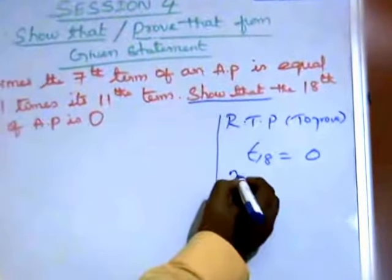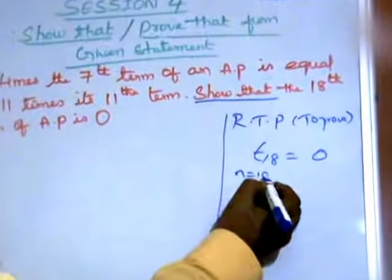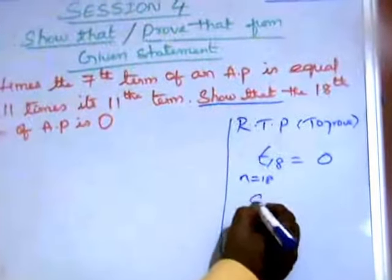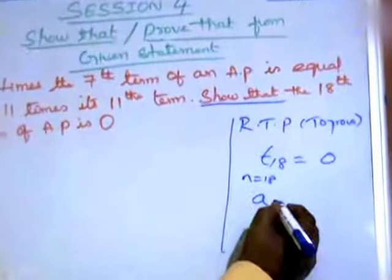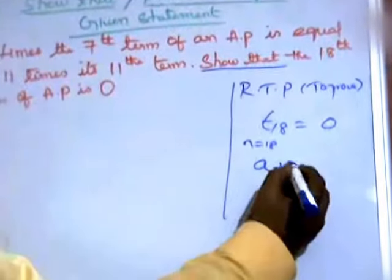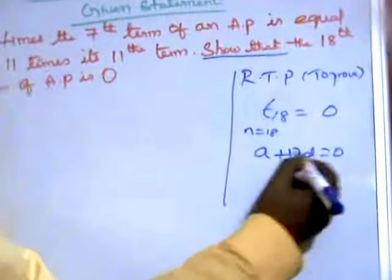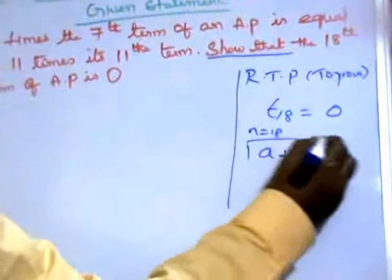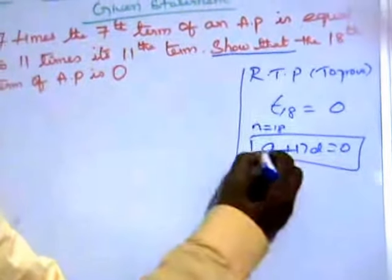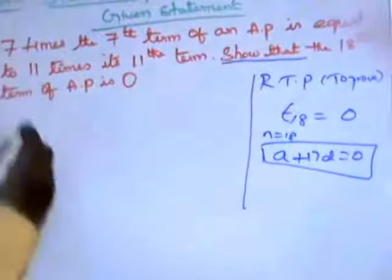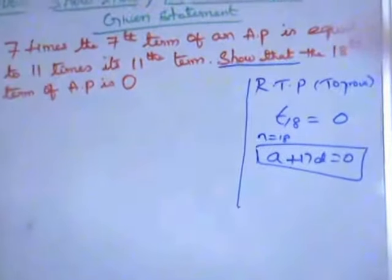Remember, the 18th term means n equals 18. You must prove that a plus 17d equals 0. This is what you must prove. Now we will go to the given statement.